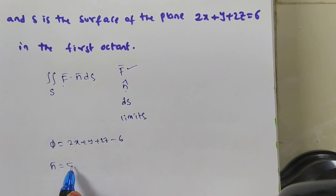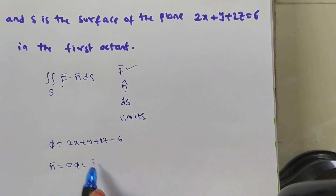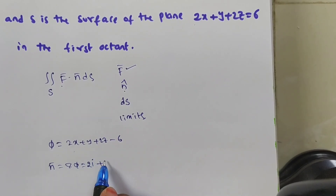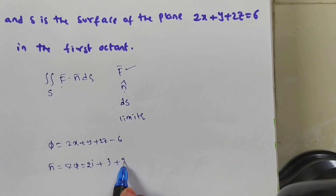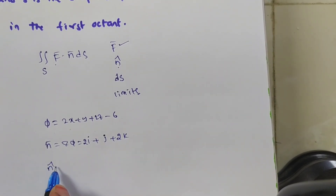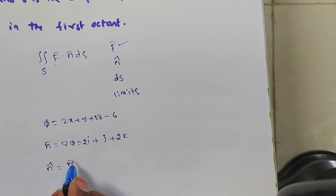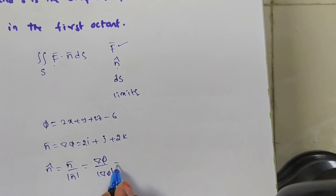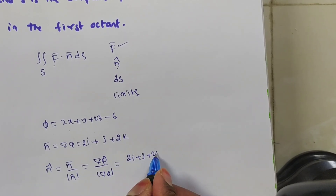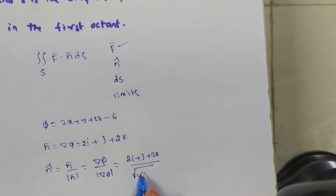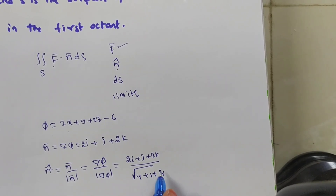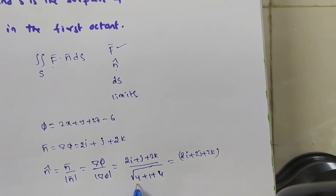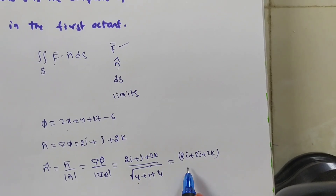What is n̄ here? n̄ is nothing but ∇π. So what is ∇π? It is i·(∂π/∂x) + j·(∂π/∂y) + k·(∂π/∂z), which gives 2i + j + 2k. The unit normal vector is n̄/|n̄| = ∇π/|∇π| = (2i + j + 2k) / √(4 + 1 + 4) = (2i + j + 2k) / 3.